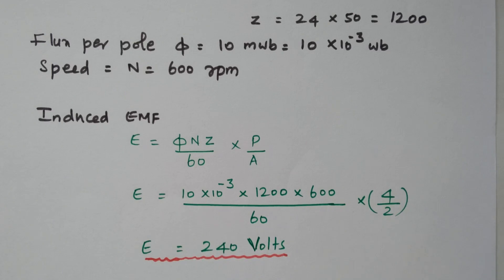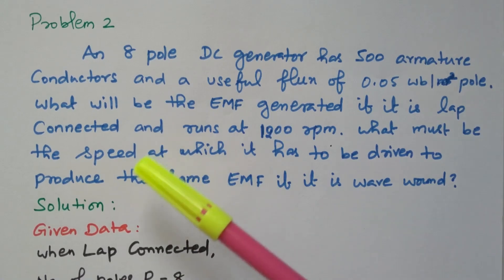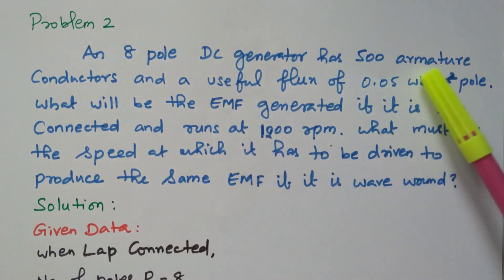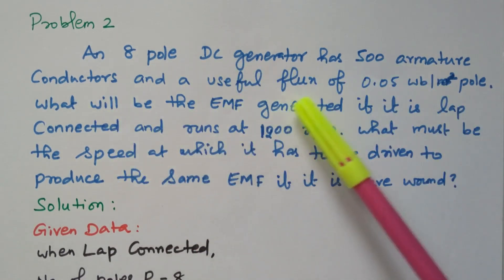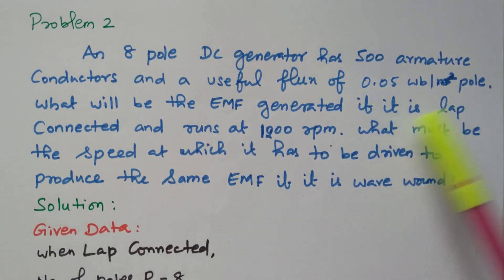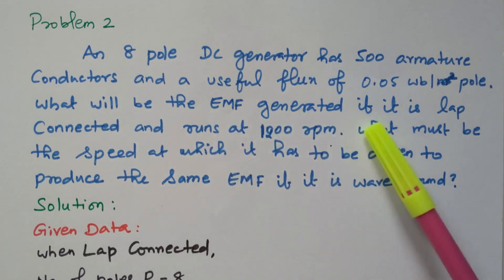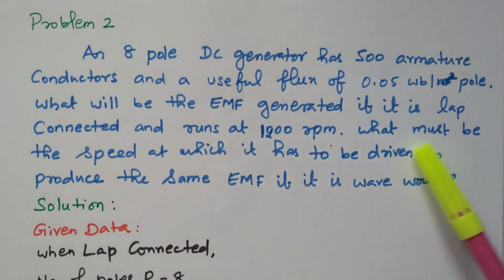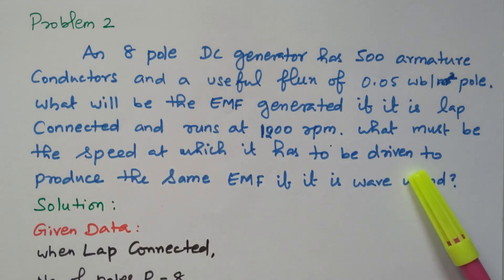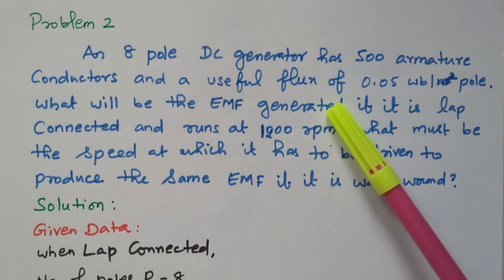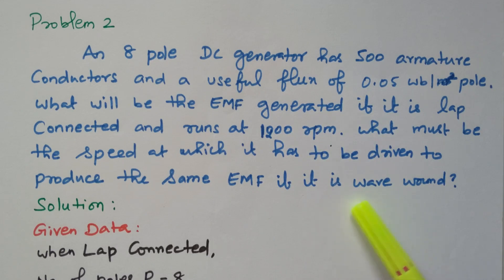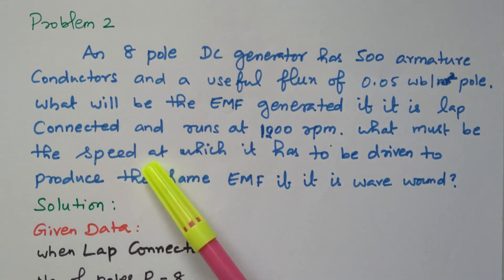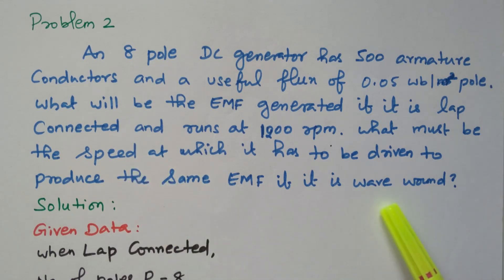Now we will go to the second problem. An 8-pole DC generator has 500 armature conductors and a useful flux of 0.05 Weber per pole. What will be the EMF generated if it is lap connected and runs at 1200 RPM? What must be the speed at which it has to be driven to produce the same EMF if it is wave connected?